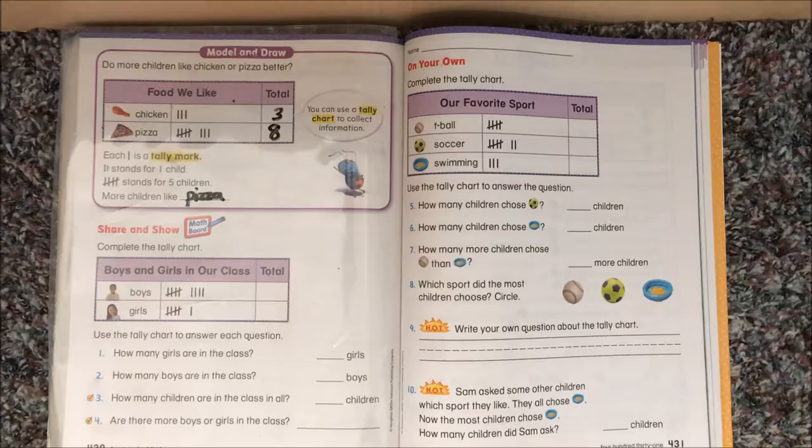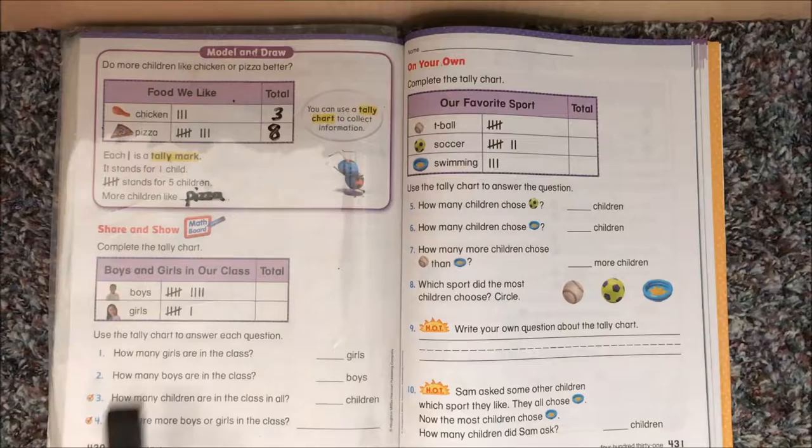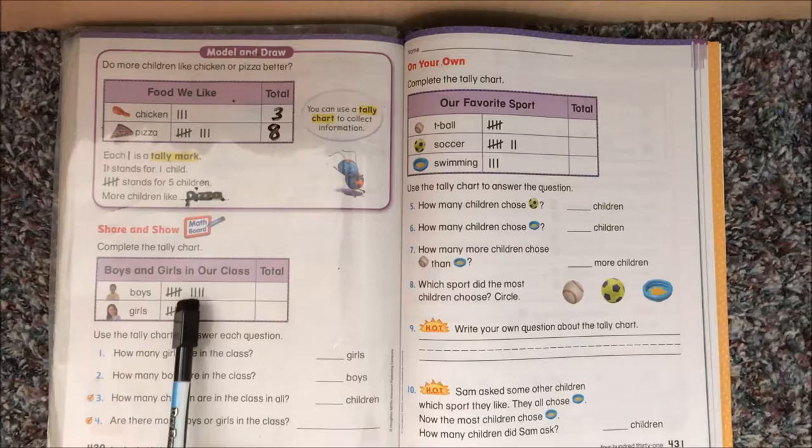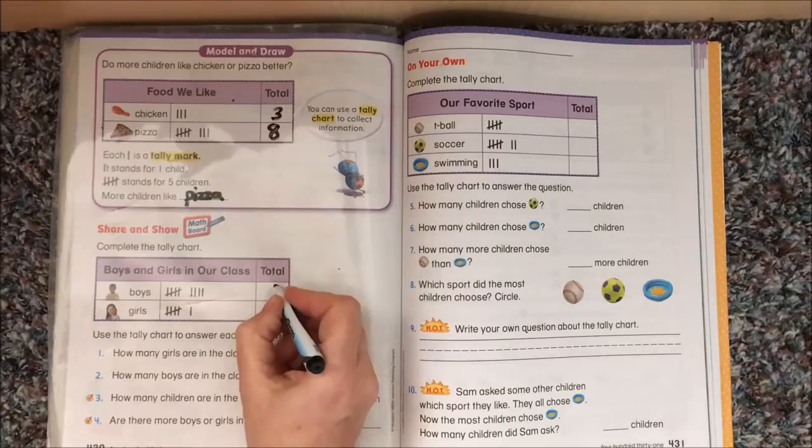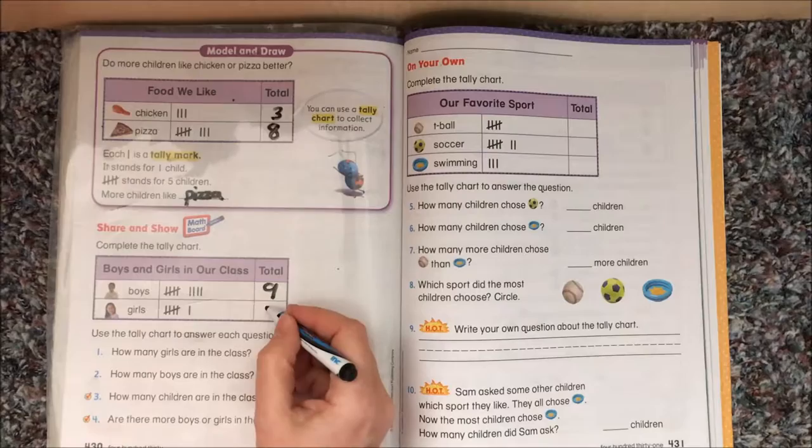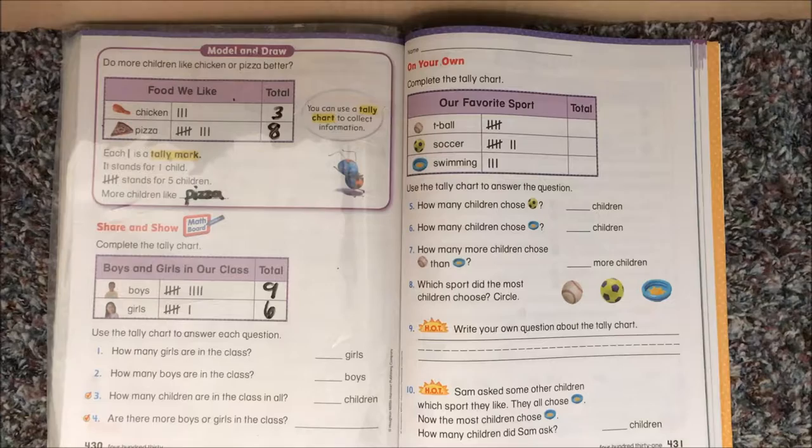Okay, let's look at this tally chart. Complete the tally chart. So we need to fill in the number that each set of tallies represents. Let's look. For boys, there's a set, which is 5. And then we can count on 6, 7, 8, 9. Or some of you might just go, okay, that's 5. I know that's 4. 5 and 4 is 9. Either way works. Okay. Girls, 5 and 1 is 6. 9 boys, 6 girls in the class. Boys and girls in our class is the title of that chart.